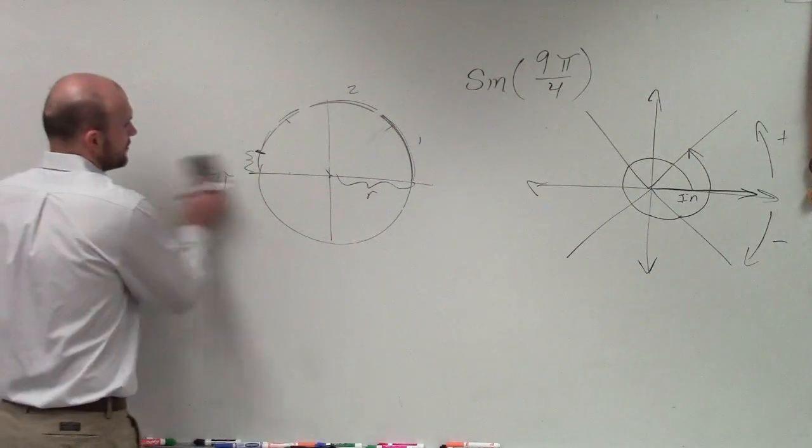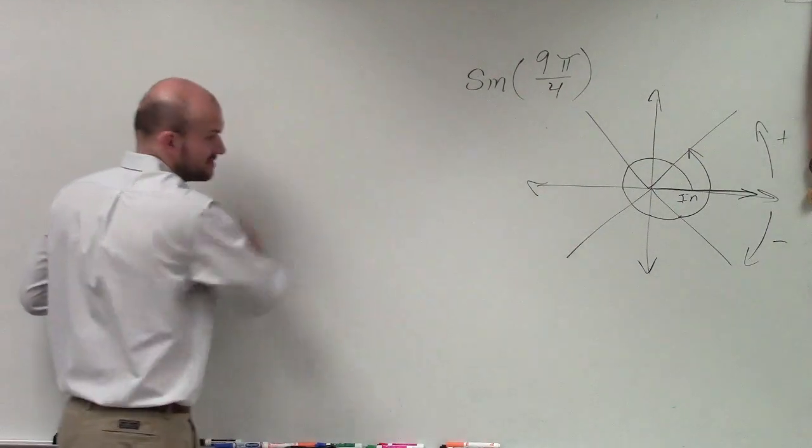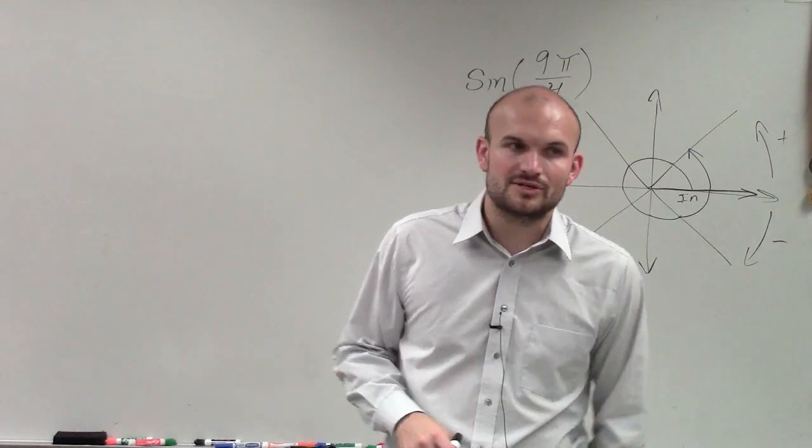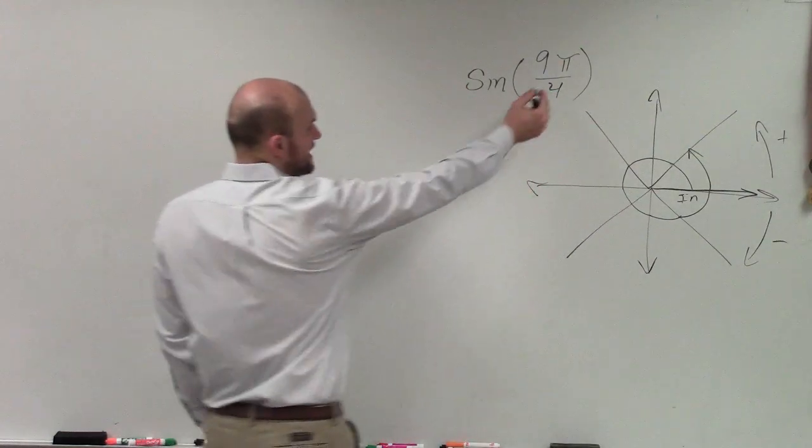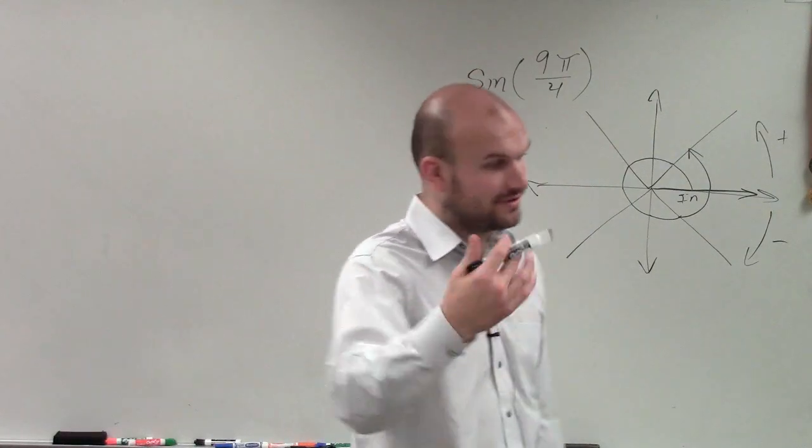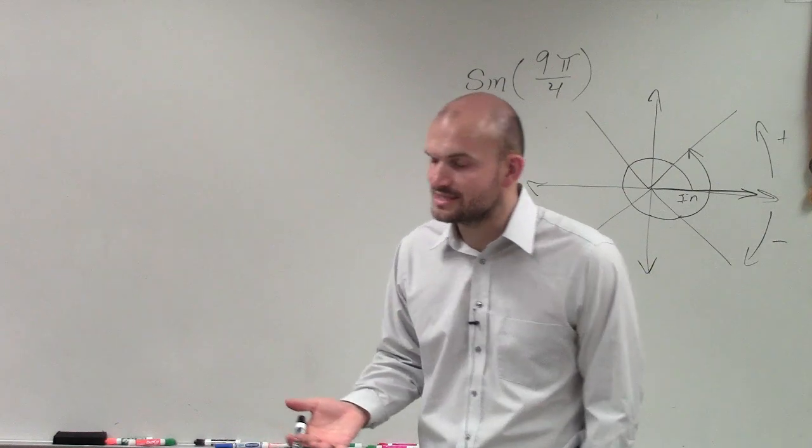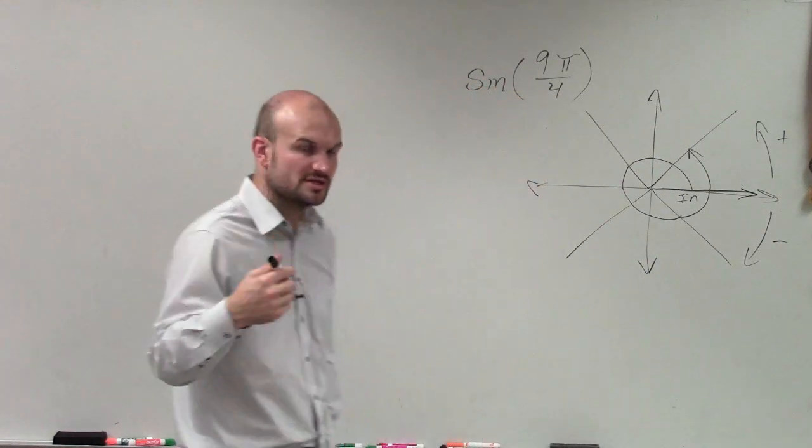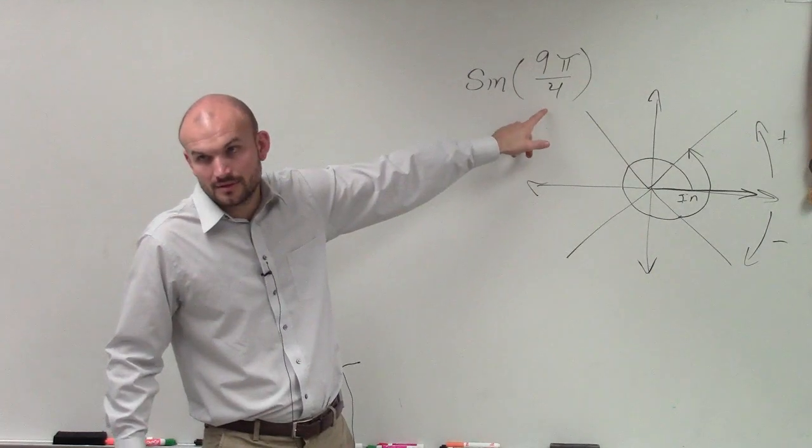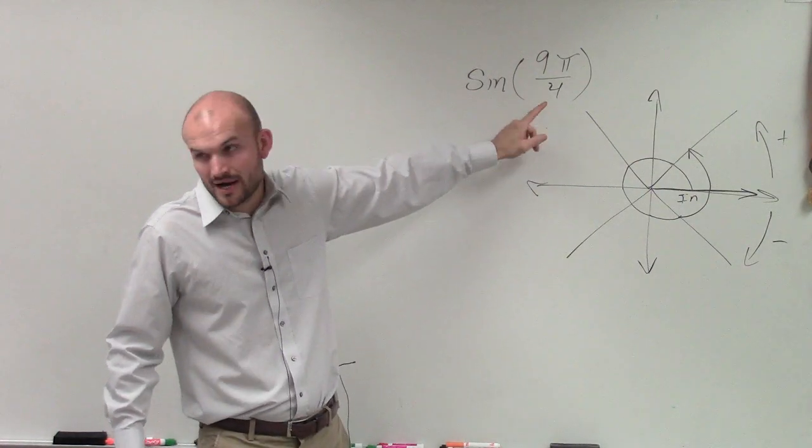Rather than drawing a graph every single time and trying to figure out where our angle is, if we have an angle that's greater than 2π or greater than one revolution of a circle, what we can do is use period as an aid to find the coterminal angle.